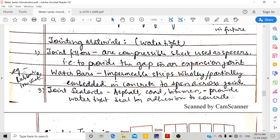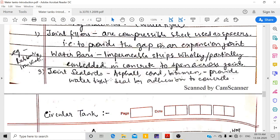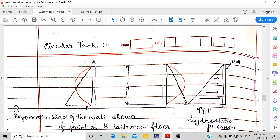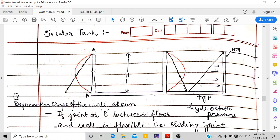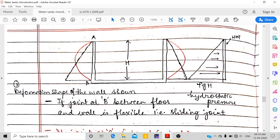Water bars can be iron sheets or rubber. I have shown a deformation diagram - this is a circular water tank of height H. You'll have hydrostatic pressure because of water. The pressure is ρgh, like in retaining walls. If the joint at B is flexible or like a sliding joint, the deformation shape is like this.